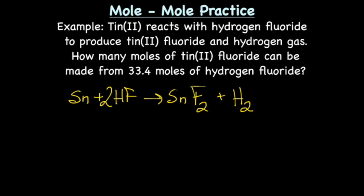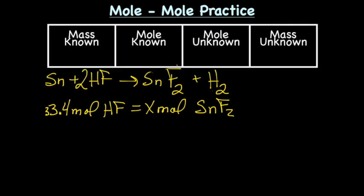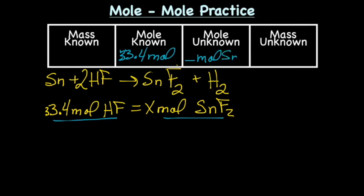Our math problem: we have 33.4 moles of hydrogen fluoride (HF), and we're trying to figure out the number of moles of tin fluoride (SnF2). Fill out the map: the known is moles of HF — 33.4 moles HF — and the unknown is moles SnF2.